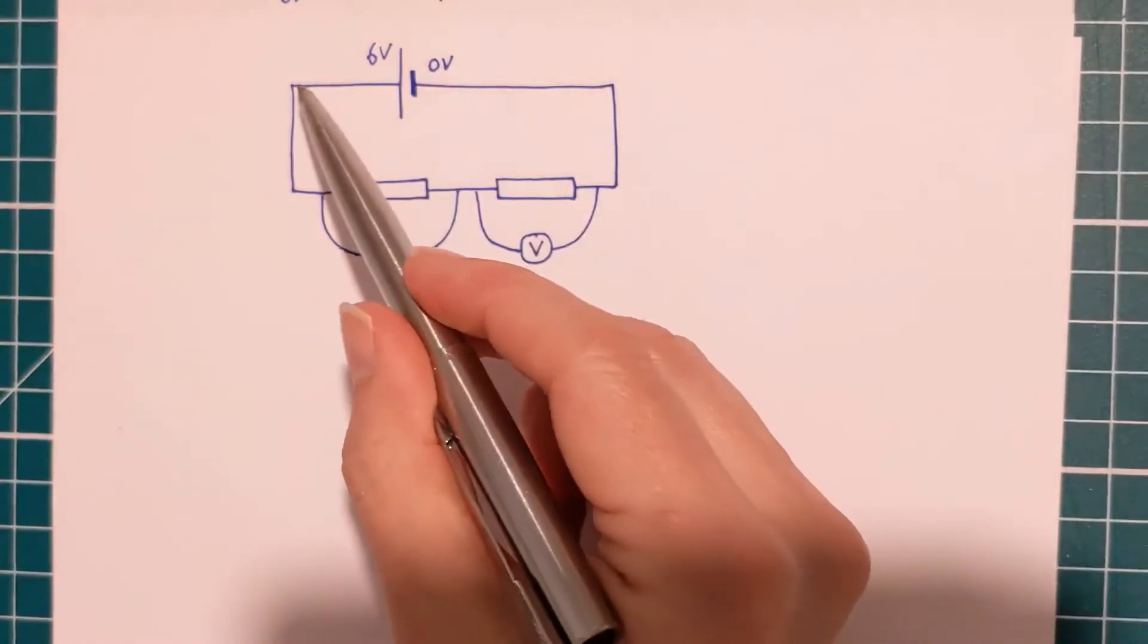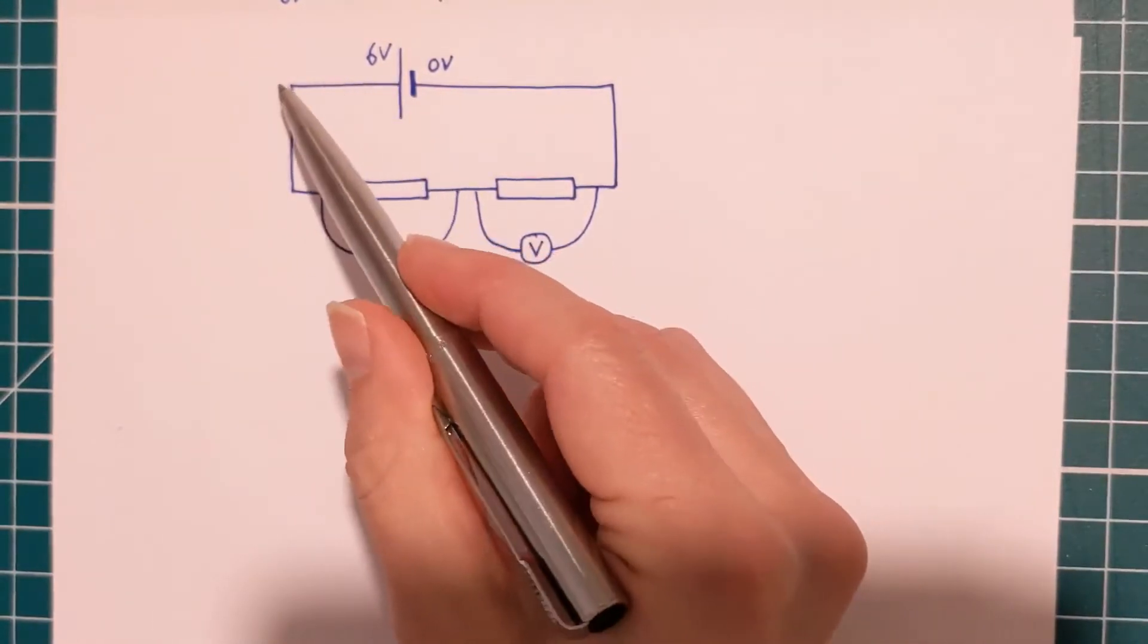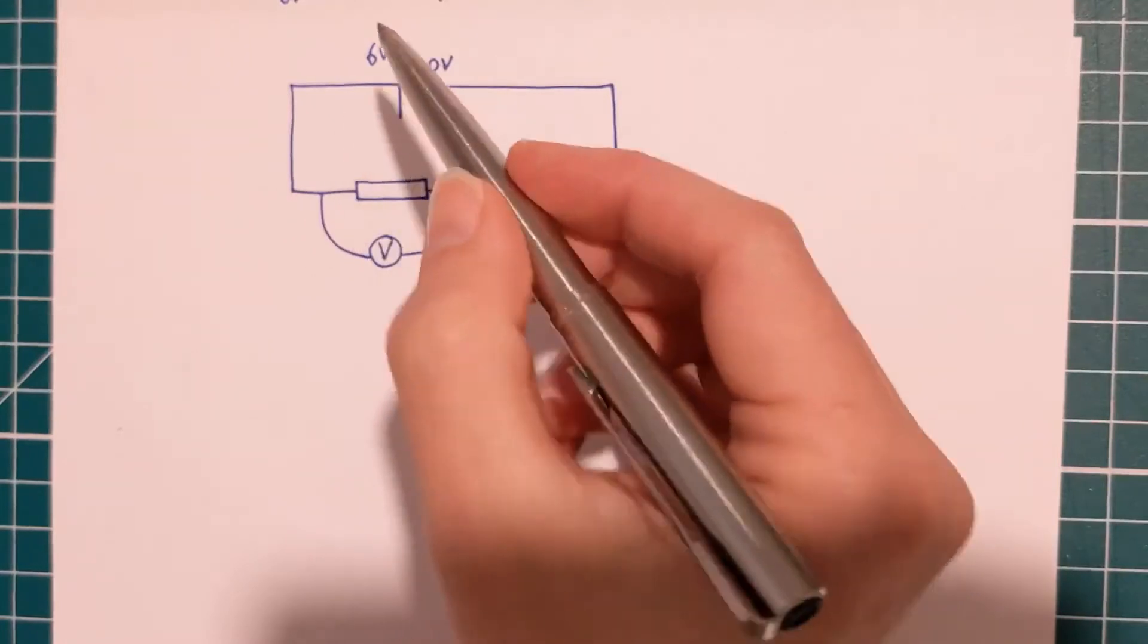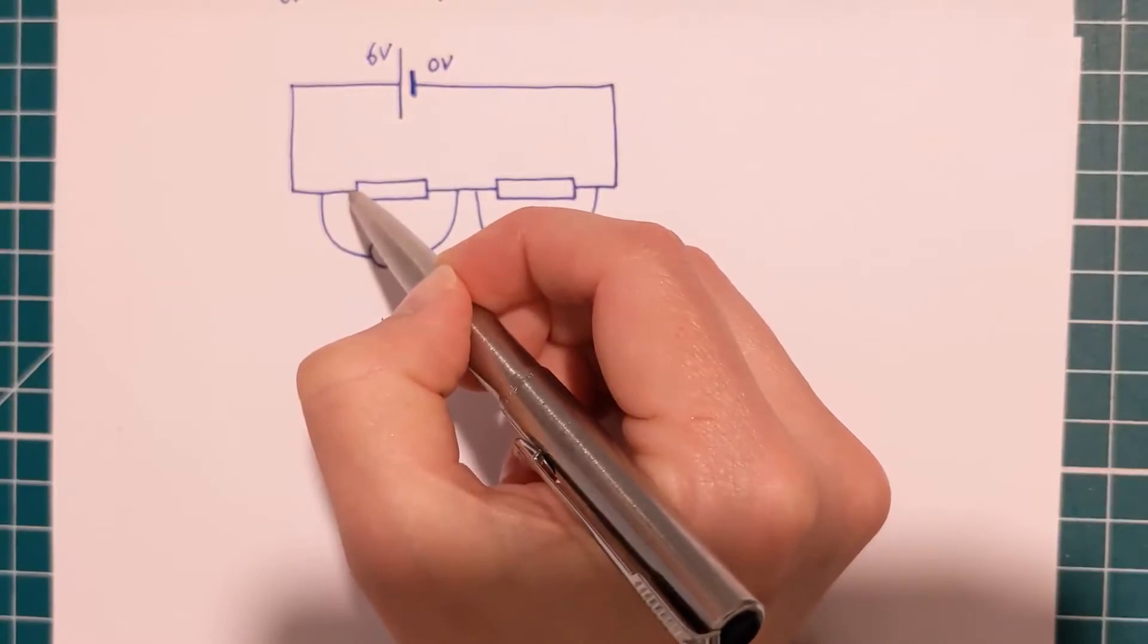Now, wires, we say they have no resistance, and so there's no potential difference across them. So that means everywhere along this wire here, the potential is six volts.